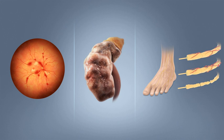In 2017, 425 million people had diabetes worldwide, up from an estimated 382 million people in 2013 and from 108 million in 1980. Accounting for the shifting age structure of the global population, the prevalence of diabetes is 8.8% among adults, nearly double the rate of 4.7% in 1980. Type 2 makes up about 90% of the cases. Some data indicate rates are roughly equal in women and men, but male excess in diabetes has been found in many populations with higher type 2 incidence, possibly due to sex-related differences in insulin sensitivity, consequences of obesity, and other contributing factors such as high blood pressure, tobacco smoking, and alcohol intake.